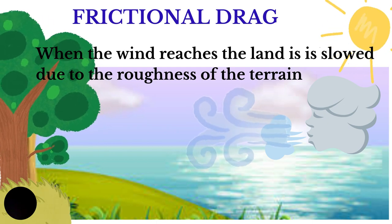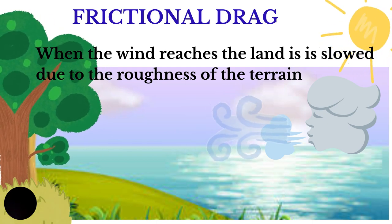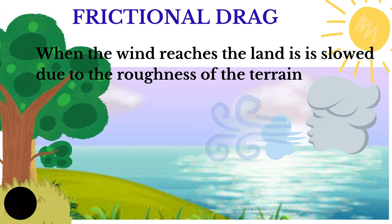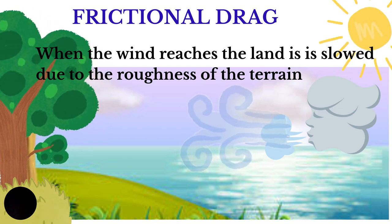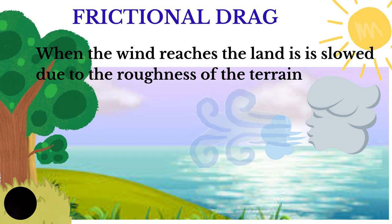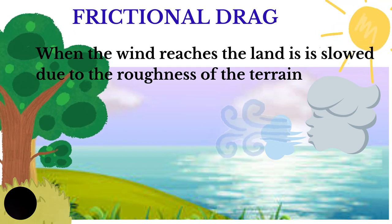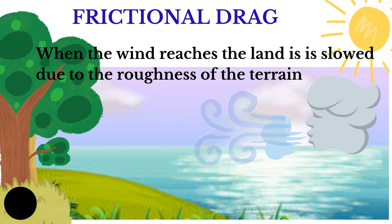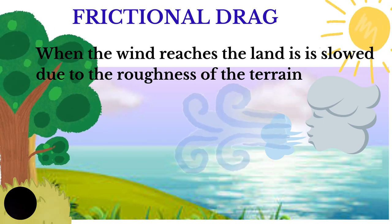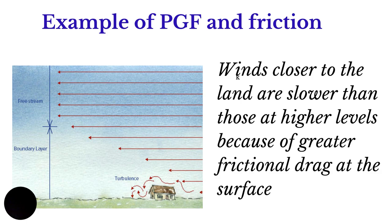When the wind is blowing over the sea, it will tend to move faster because there is less frictional drag. But when it gets to the land, it will be slowed down by increased friction. In terms of altitude, the frictional drag is greater at the surface. So the further away from the surface you go, the less will be the frictional drag, and therefore the faster the winds will blow.